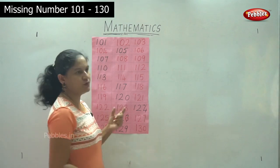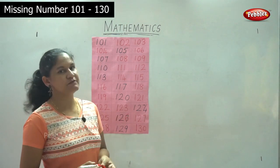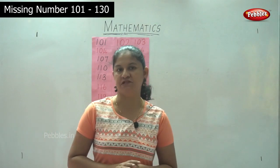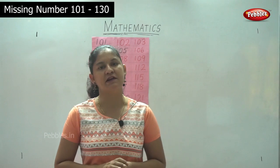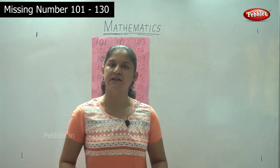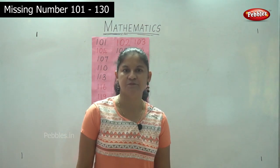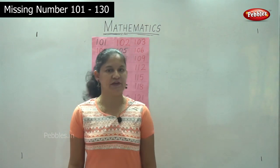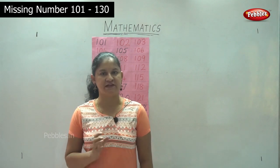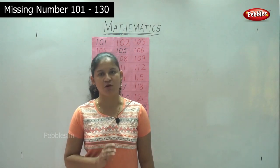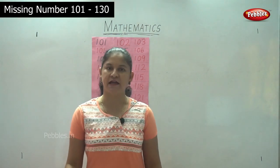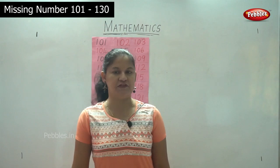So now we have seen the missing numbers for 101 to 130. I hope you are able to do it on your own — that is writing numbers from 0 to 150.